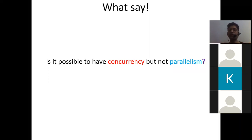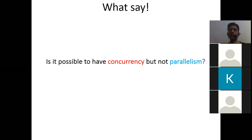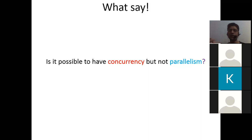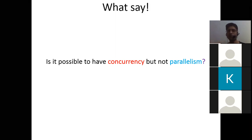Think about it — is it possible to have concurrency but not parallelism? To answer this, you need a clear understanding of two words: concurrency and parallelism. I am giving you 30 seconds to think. If you have a clear idea about concurrency and parallelism, this topic of inter-process communication will be very easy. Come on — what is concurrency and what is parallelism? Give some examples — examples are much better to put your thoughts forward.